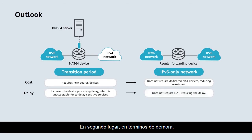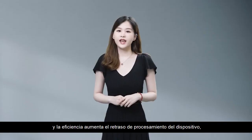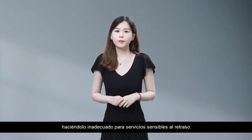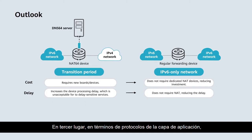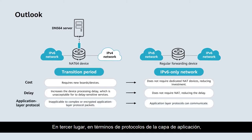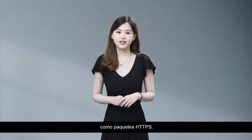Second, in terms of delay, IP address translation in NAT64 lowers the forwarding efficiency and increases the device processing delay, making it unsuitable for delay-sensitive services. Third, in terms of application layer protocols, NAT64 is not feasible for complex or encrypted protocol packets, such as HTTPS packets.